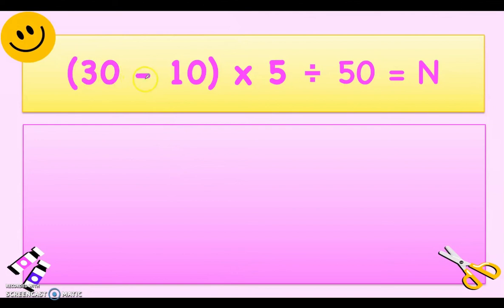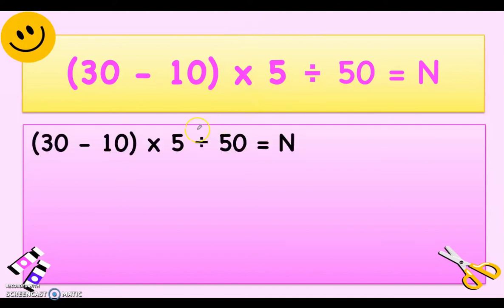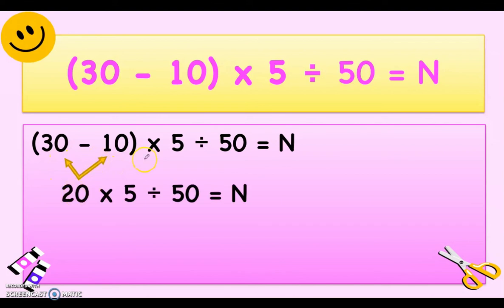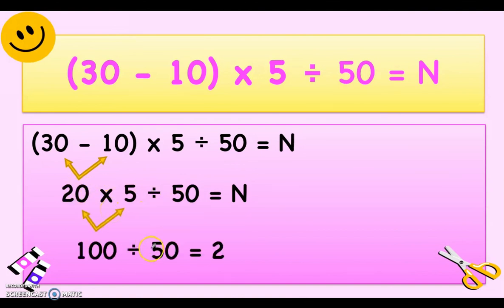Last example: open parenthesis 30 minus 10 close parenthesis times 5 divided by 50 equals n. Following the GEMDAS rule, we perform what's inside the parenthesis first: 30 minus 10 is 20. Copy the rest: times 5 divided by 50. Then multiply before dividing: 20 times 5 is 100, divided by 50 equals 2.